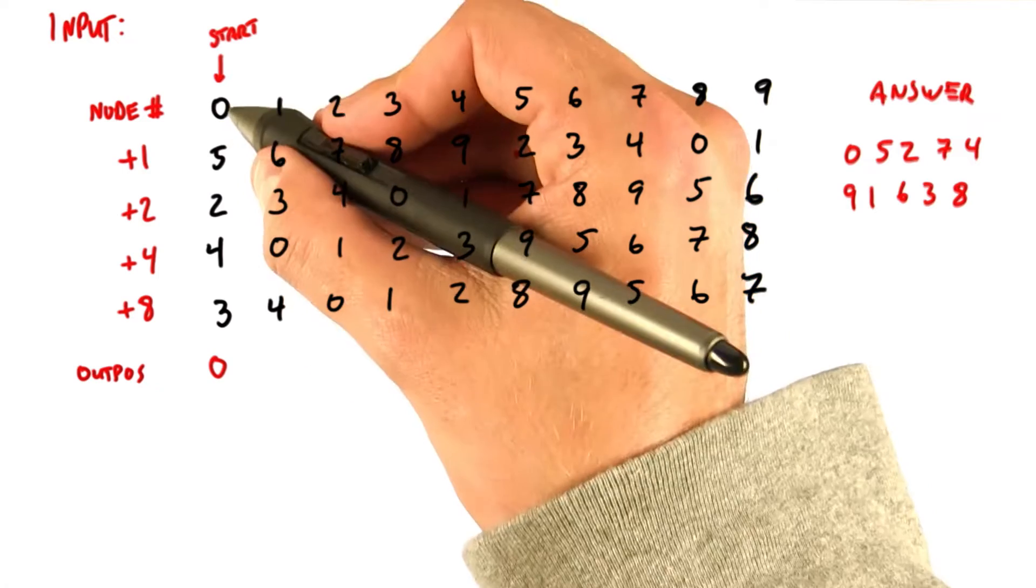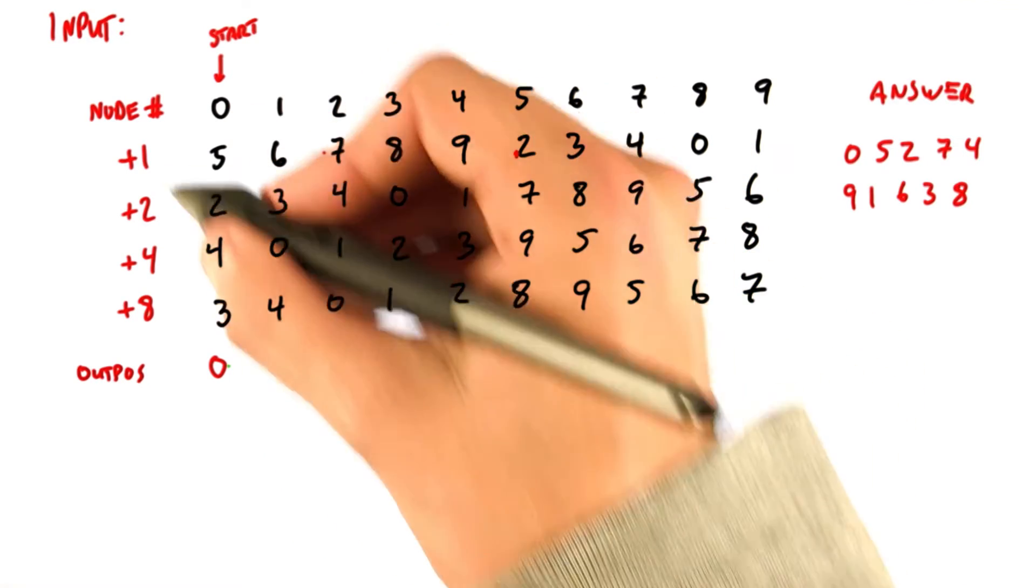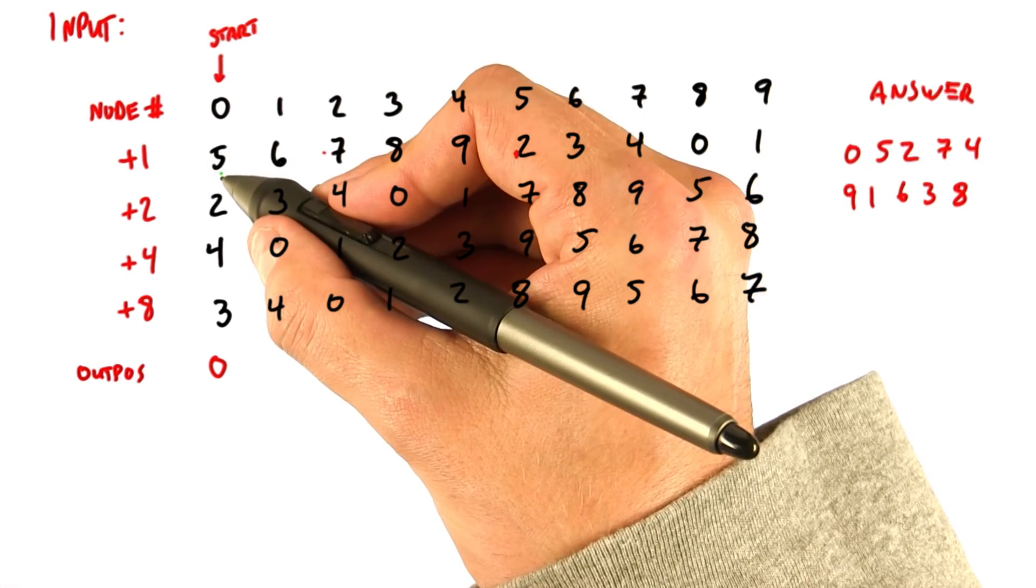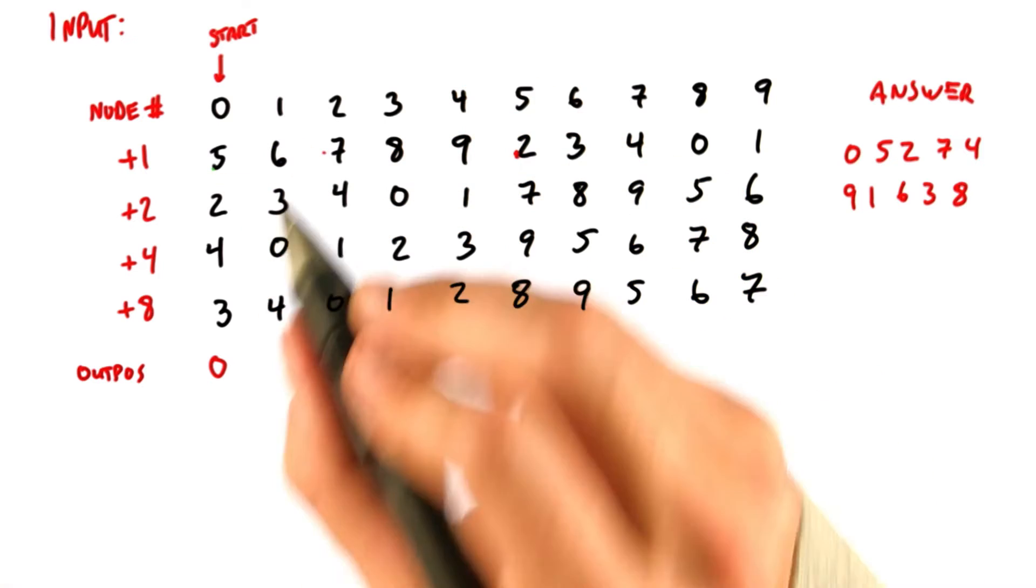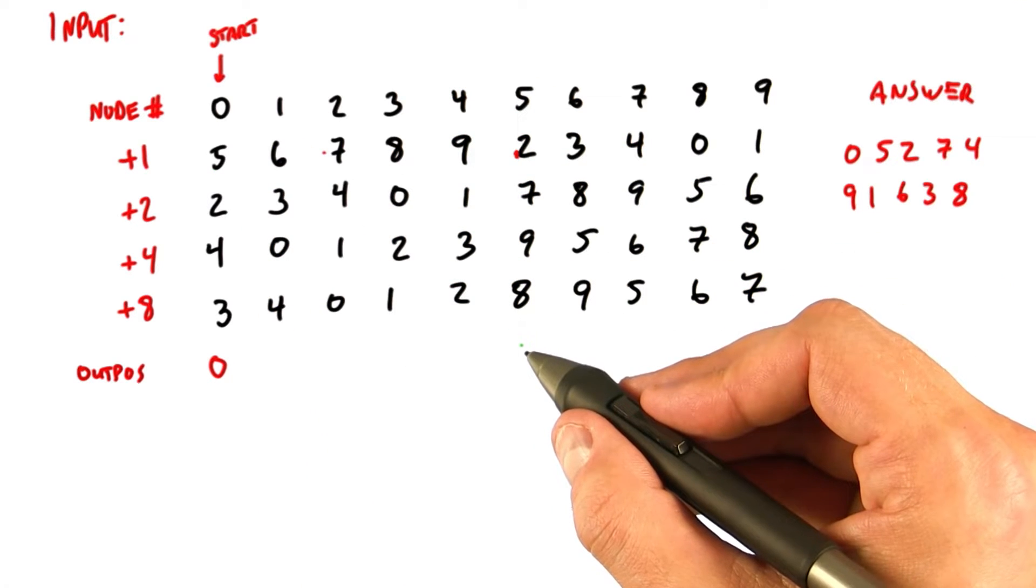So for the first iteration, node 0 wants to wake up its successor. So how does it find the successor? Well, it can just look in this plus 1 array to find its immediate successor. And so we can immediately see that's node number 5.